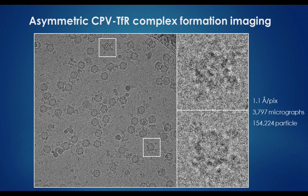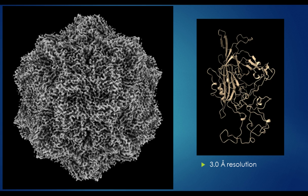This is an image that shows a micrograph, this is the output from the Titan Kryos. This is the complex shown as a 2D projection in a raw micrograph, and the little boxed areas are blown up on the right, and you can see the outline of the capsid and then make out some TFRs bound to it. We had about almost 4,000 micrographs, and we were able to collect 154,000 particles or so from this data set, and we used those for the 3D reconstruction.